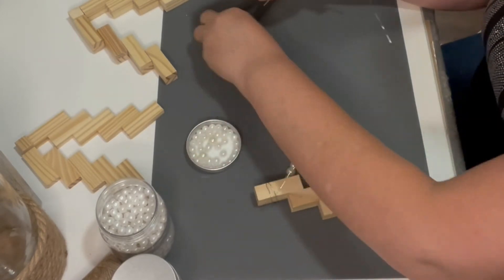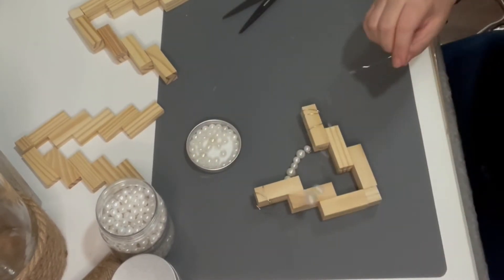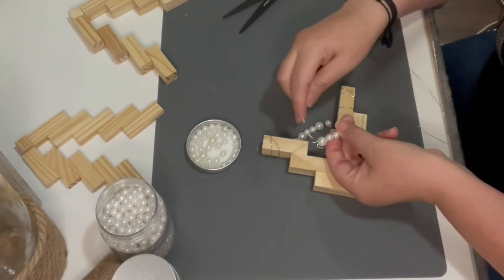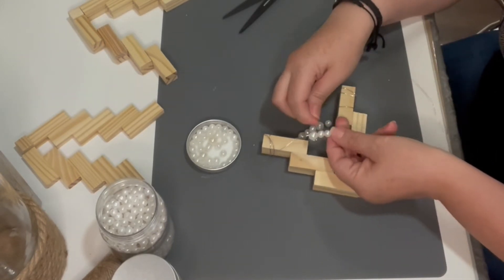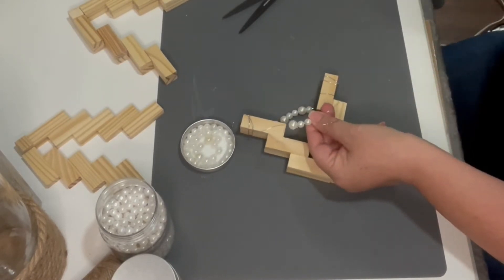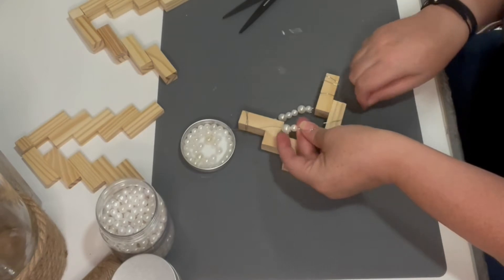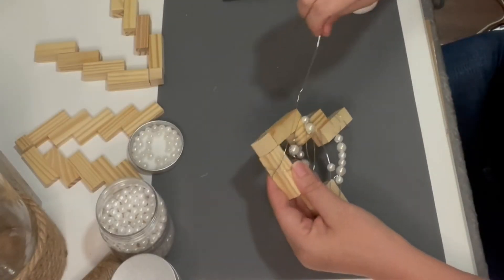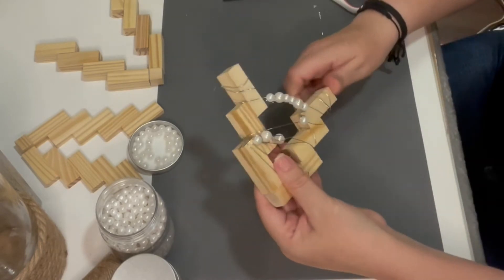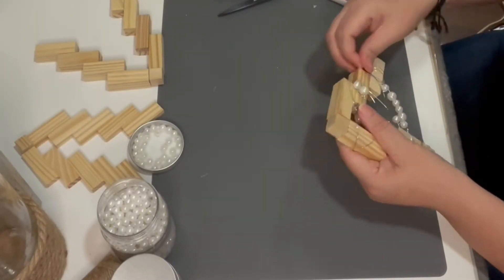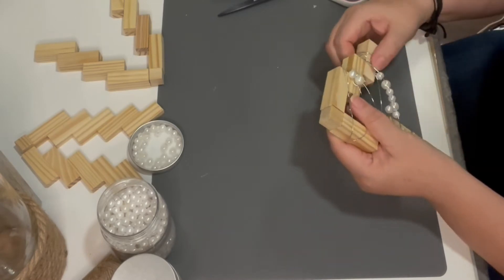So after adding all the pearls that I wanted, I just went ahead and wrapped the remaining of the wire and ended up right where I started and just give it one last wrap and it's done. It came out really cute.